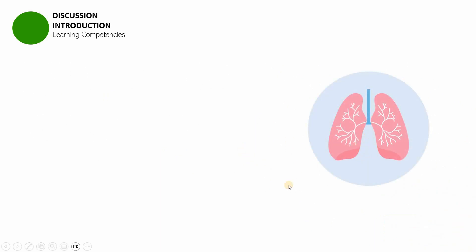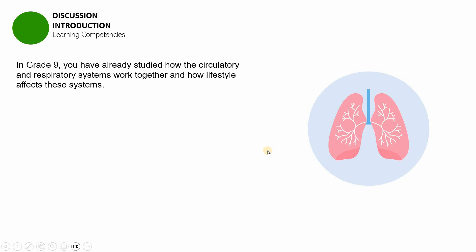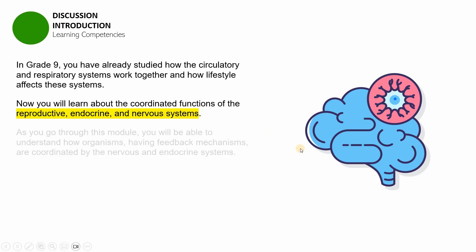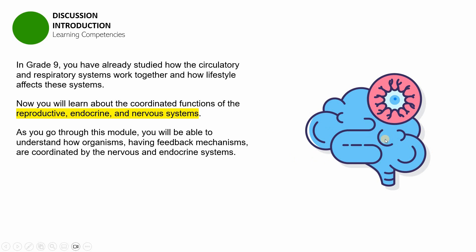When you were in ninth grade, you studied the circulatory and respiratory systems — how they work together and how lifestyle decisions like cigarette smoking or cardiovascular exercise affect the general health of these two organ systems. This year, you will be learning about the coordinated functions of the reproductive, endocrine, and nervous systems. We are going to start with the nervous system.